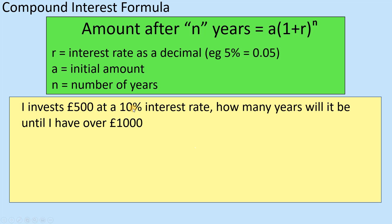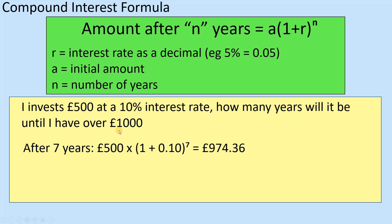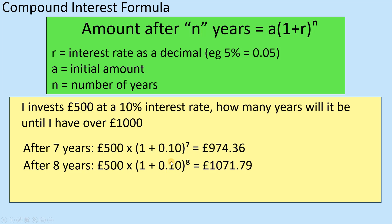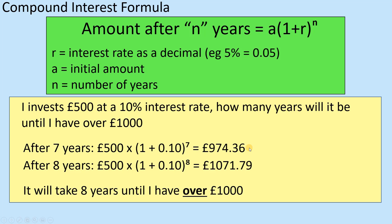If I invest £500 at a 10% interest rate, how many years would it be until I have over £1,000? We're going to trial and error this. Let's try seven years: 500 times 1 plus 0.1 — which is 1.1 — to the power of 7, gives £974. Not yet. After eight years, 500 times 1.10 to the power of 8 gives £1,071. So how many years until they have over £1,000? Eight years — at seven years he doesn't have it, so it has to be eight years.